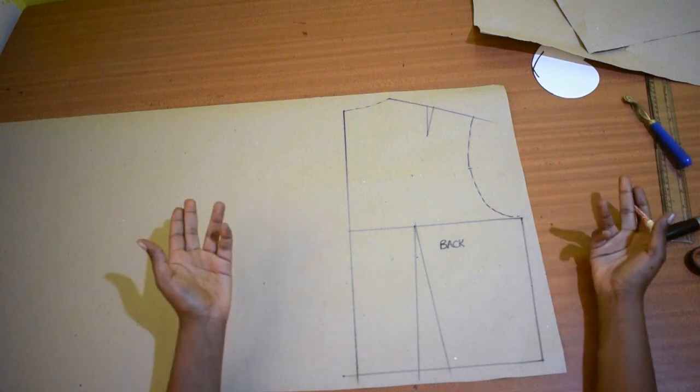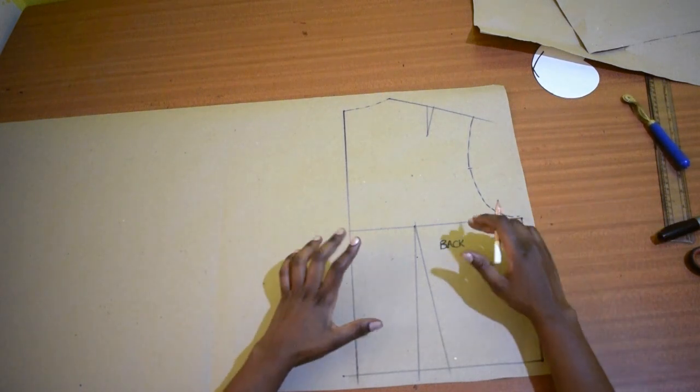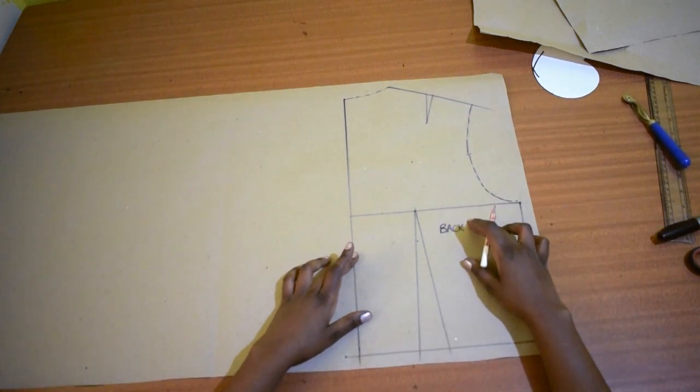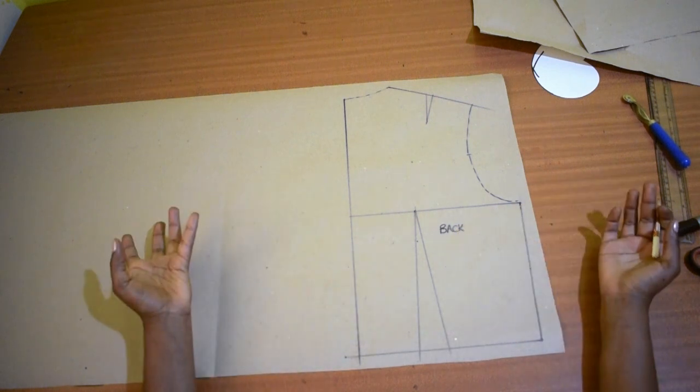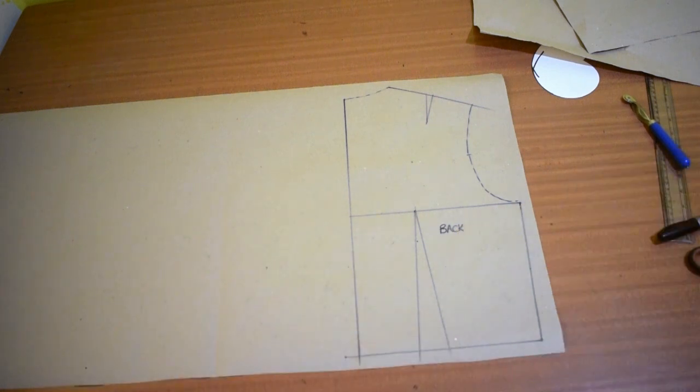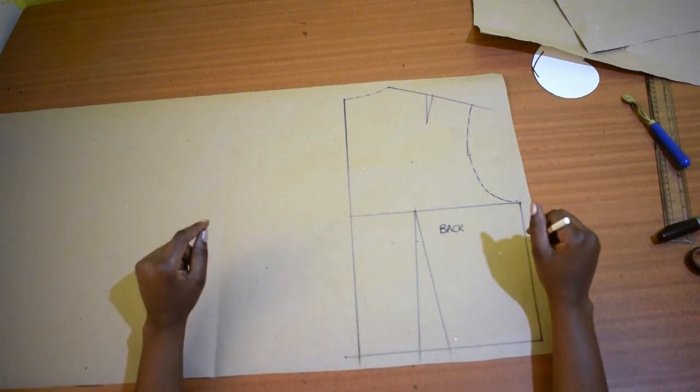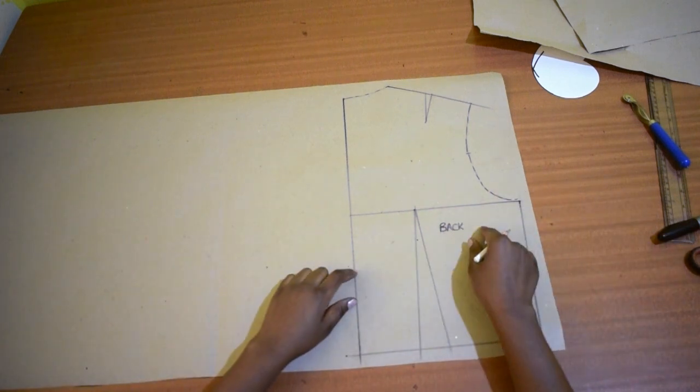First you want to trace, since we are working on the back, you want to trace your back pattern, the close fitting one, unless you want to do an unclose fitting one, in which case you will use an easy fitting block. But in this case I'm using a close fitting block, so trace that out like I have done here.